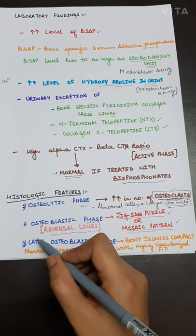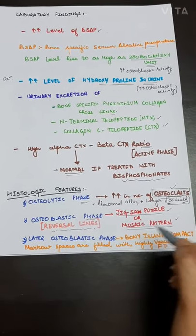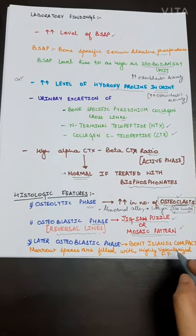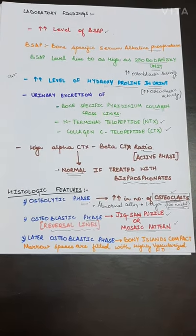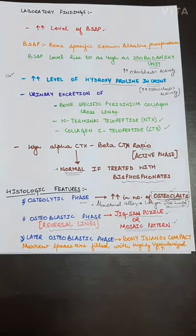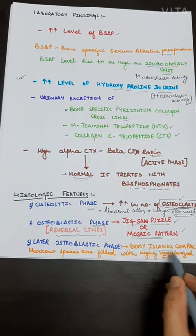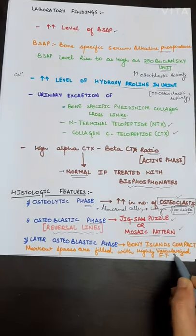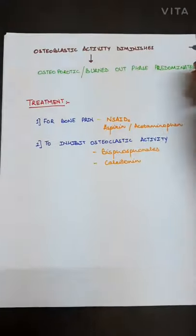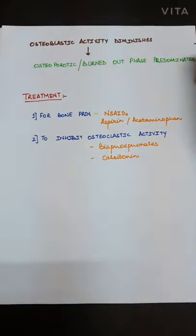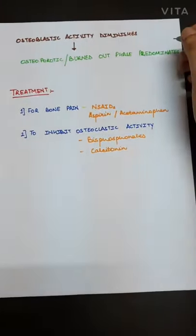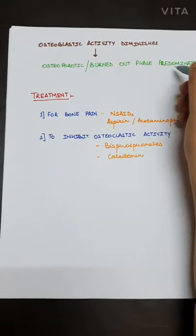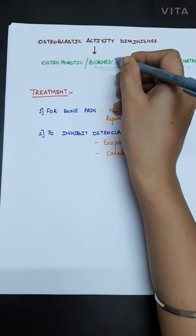Thirdly, the later osteoblastic phase. There will be an increase in the number of vasculature. There will be a highly vascularized fibrous tissue. There will be bony islands which will be compact and marrow spaces are filled with highly vascularized fibrous tissue. And when the osteoblastic activity diminishes, it will give osteoporotic or burned out phase will predominate.